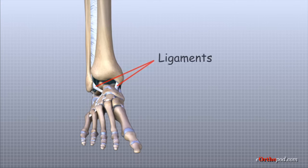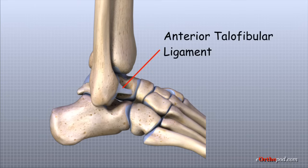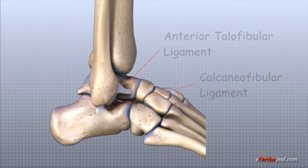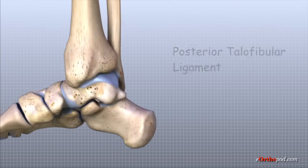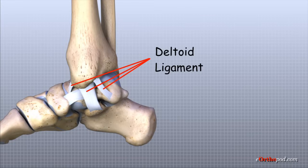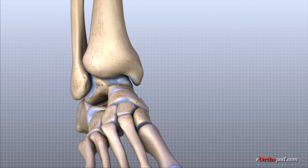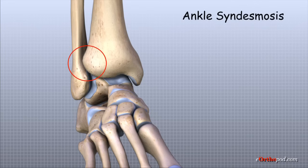Ligaments on both sides of the ankle joint help hold the bones together and stabilize the ankle. Three ligaments make up the lateral ligament complex: the anterior talofibular ligament, the calcaneofibular ligament, and the posterior talofibular ligament. A group of ligaments called the deltoid ligament support the medial side of the ankle. Ligaments are also important in connecting the distal tibia and distal fibula at the lower end of the leg, where it forms the ankle mortise. This connection and the collection of ligaments that support it are called the ankle syndesmosis.